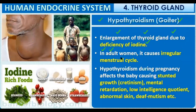Hypothyroidism can lead to abnormal menstrual cycles. It can affect pregnancy, causing stunted growth in the child — known as cretinism — along with mental retardation, low intelligence quotient in the baby, and abnormal skin. The child can also be deaf or dumb due to unregulated metabolism.